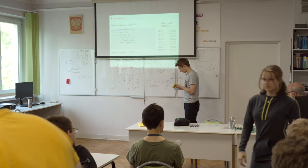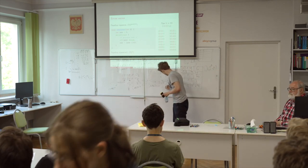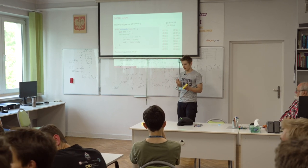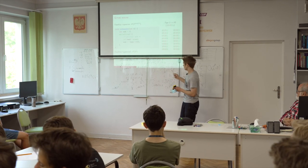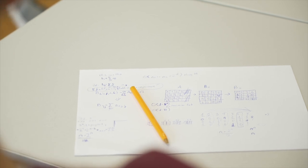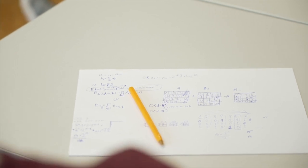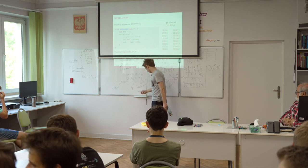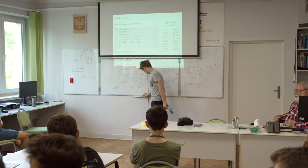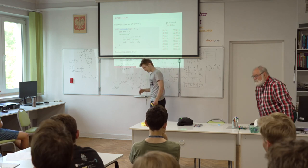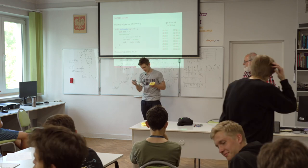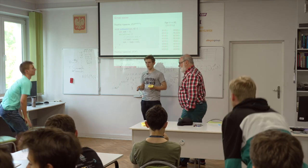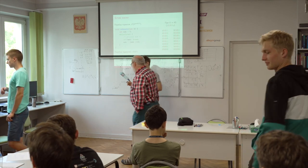So if you do this problem by iterating over submasks, you have complexity O(3^n). I promise it gets more interesting after this — we will move to more interesting problems, more interesting summations and stuff. But maybe we'll take a break now. Time for pizza. I just want to make sure that everybody understands.